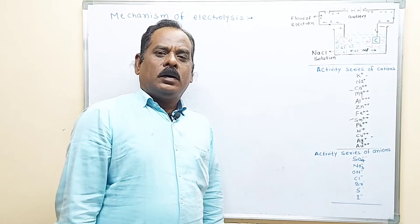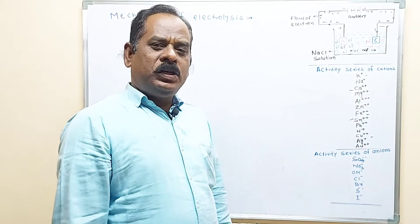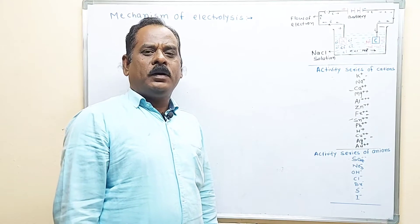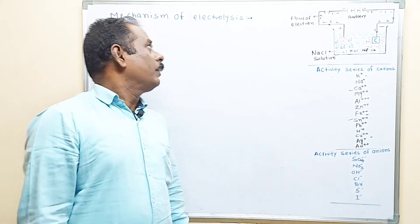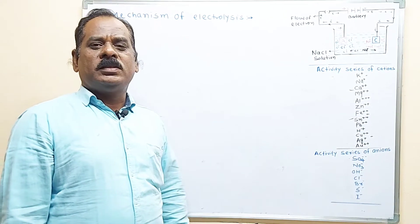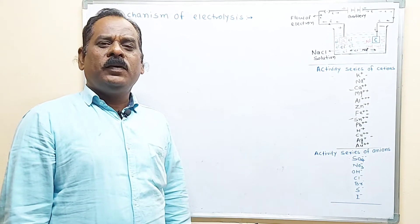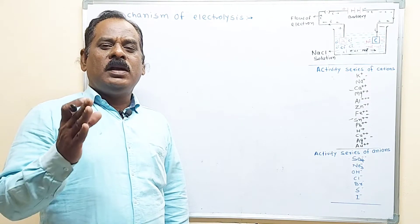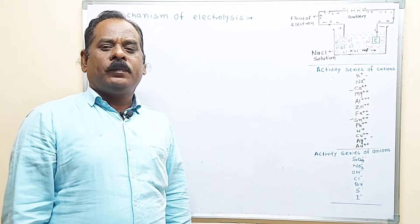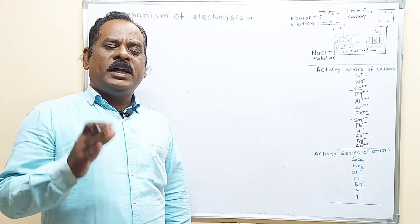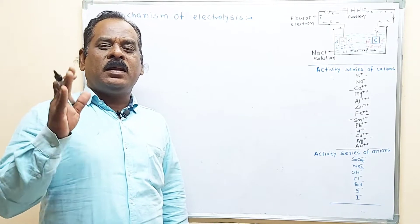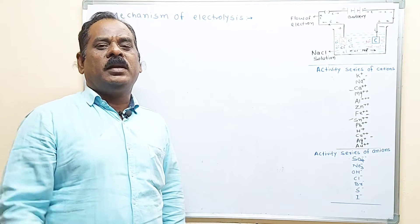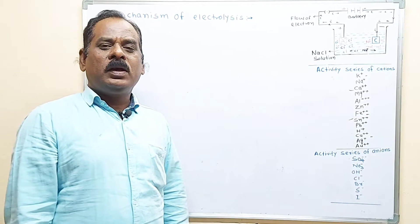Hello everyone. Today I will teach you the next point in this chapter: the mechanism of electrolysis. You know the definition of electrolysis — the chemical decomposition of an electrolyte takes place by passing electric current through its solution or in fused state; this is called electrolysis.